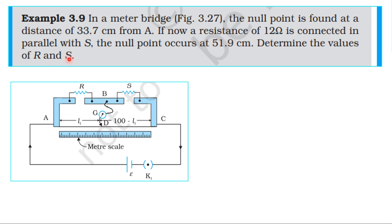Determine the values of R and S. The null point is 33.7 cm from A. If a resistance in parallel with S is connected, the null point is at 51.9 cm from A — that is the null deflection point. R and S are connected to the meter bridge. In the formula, R by S is equal to balancing length divided by 100 minus L.